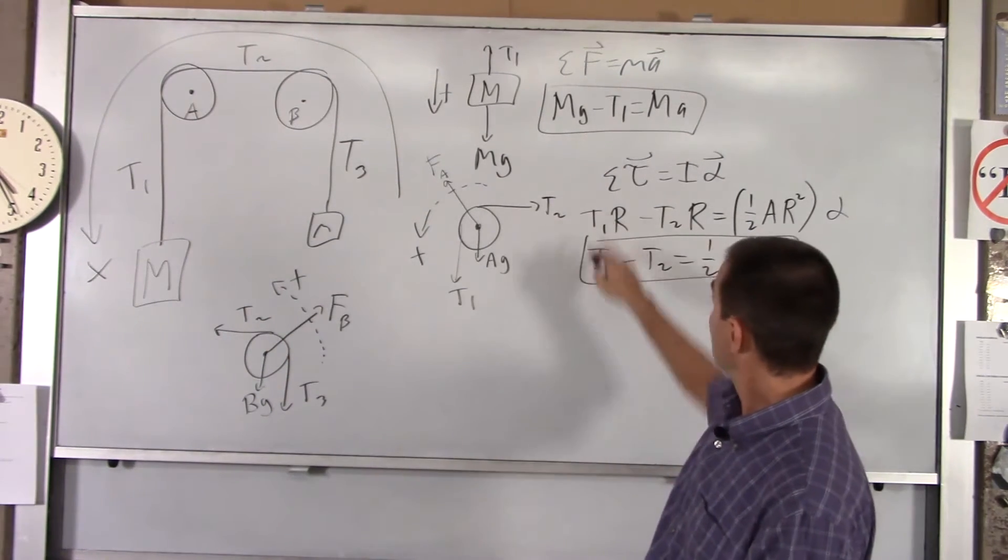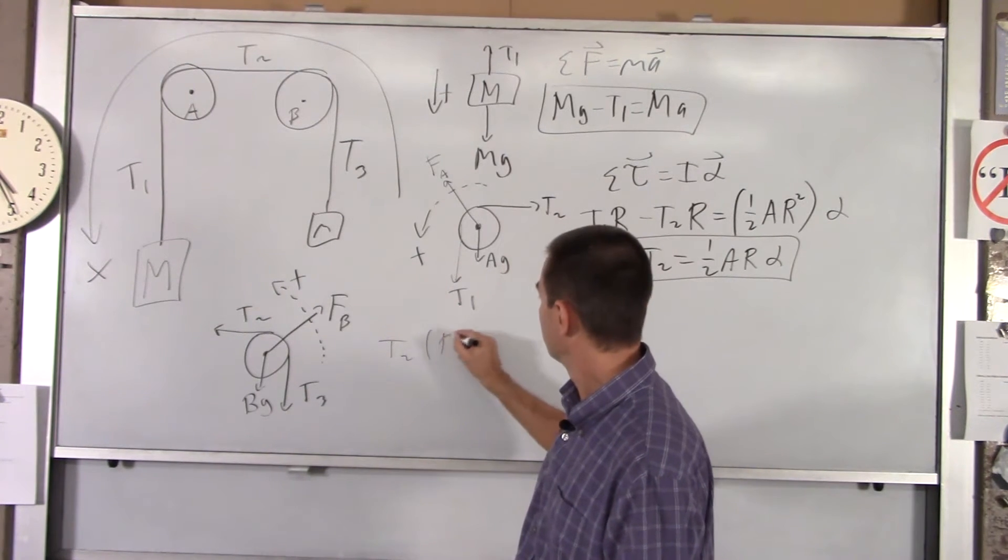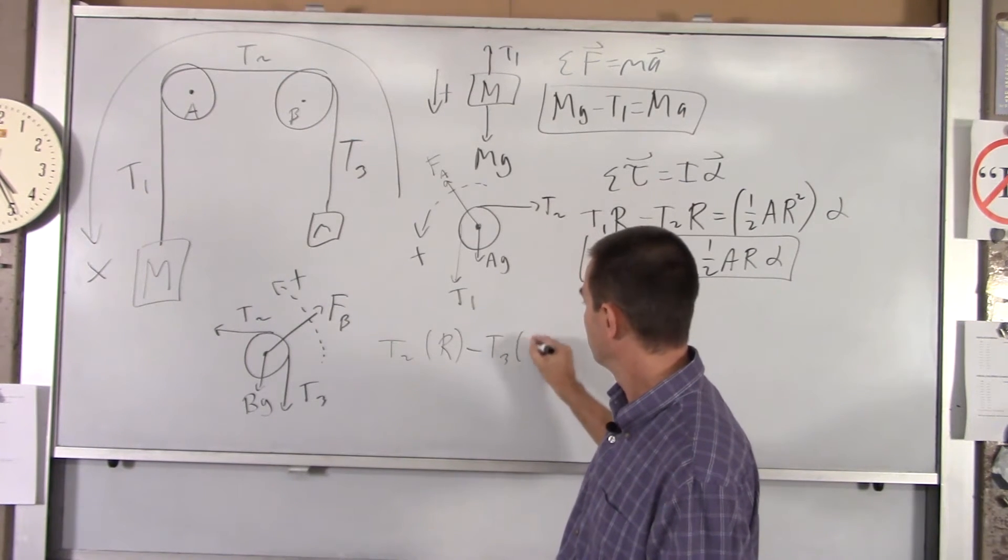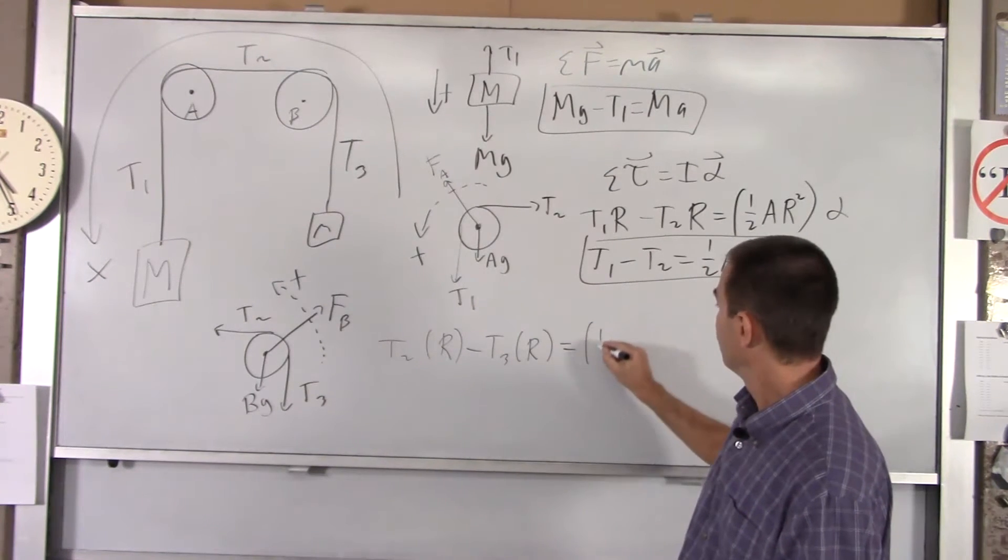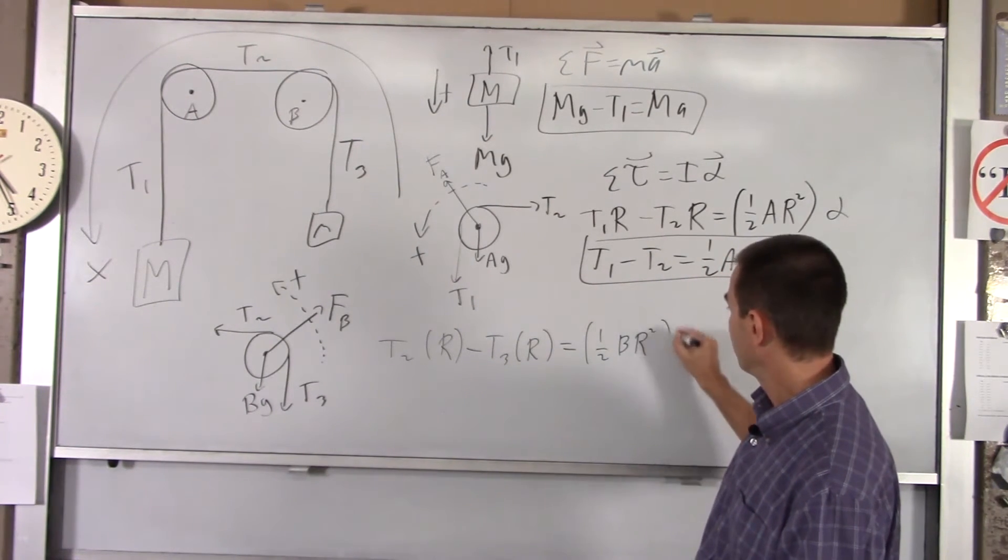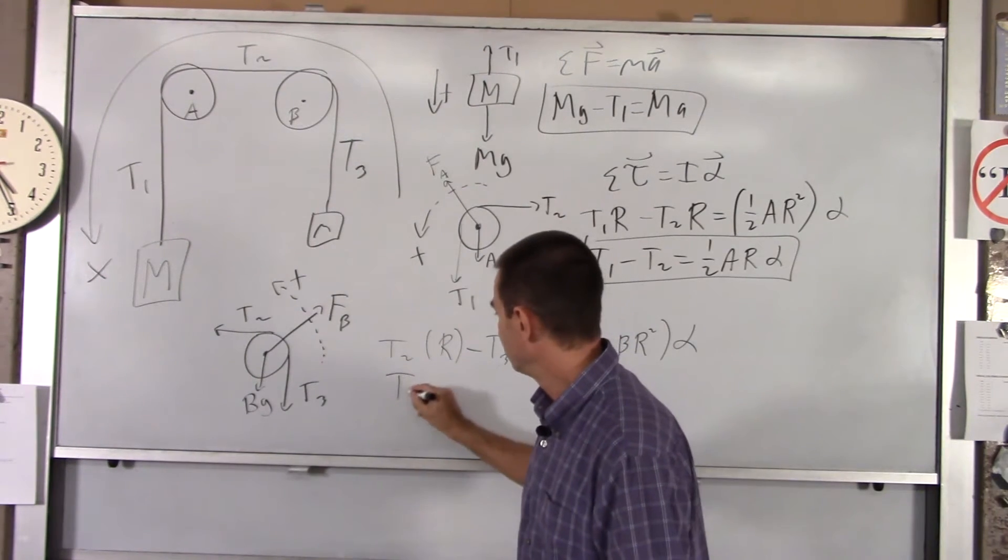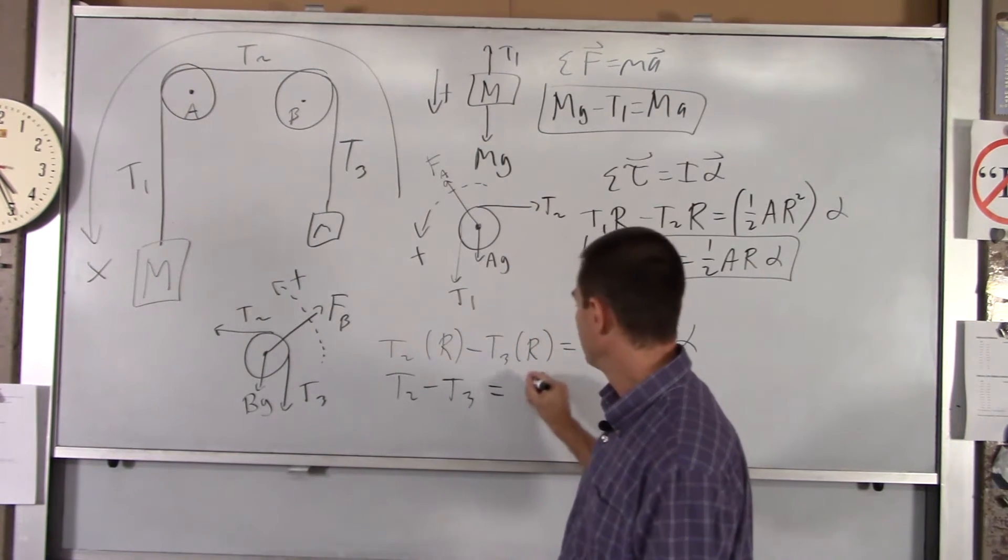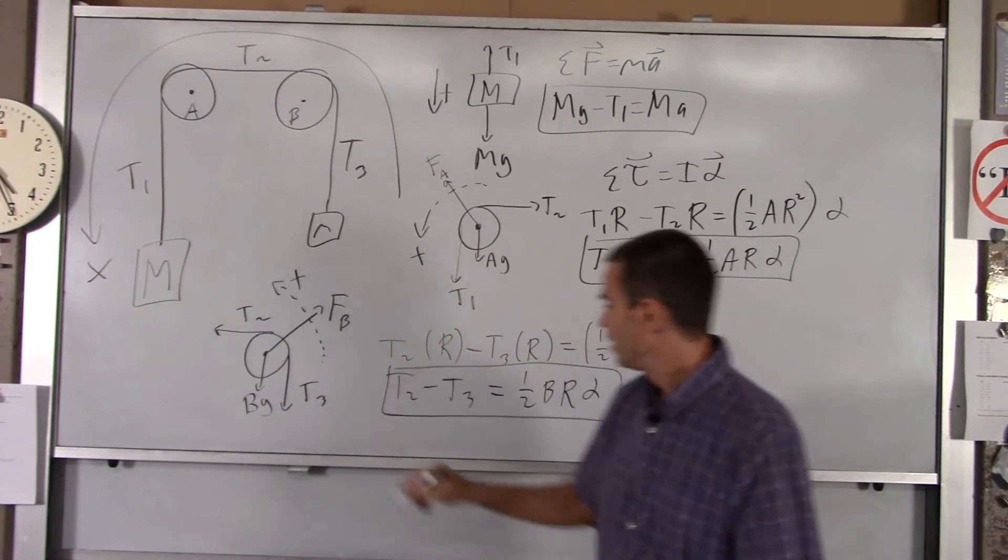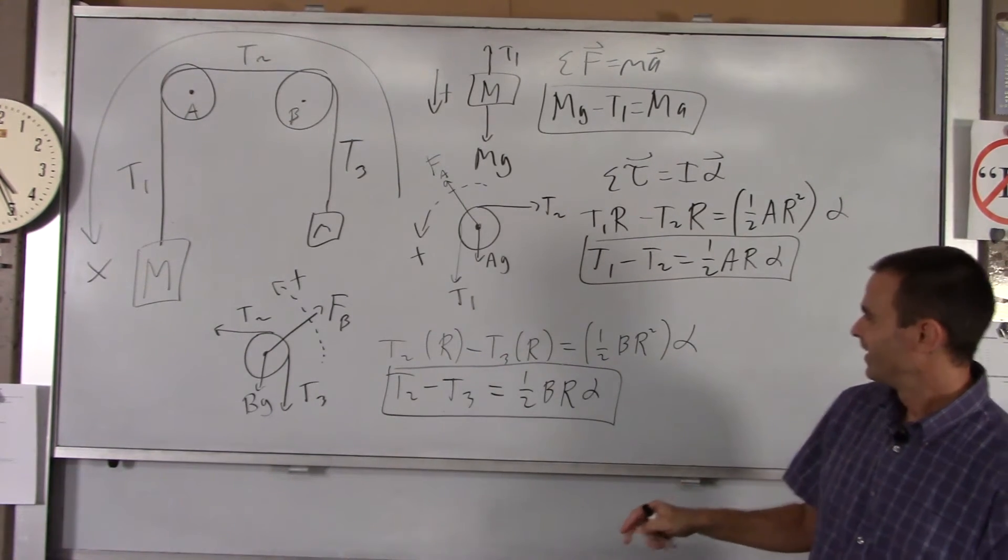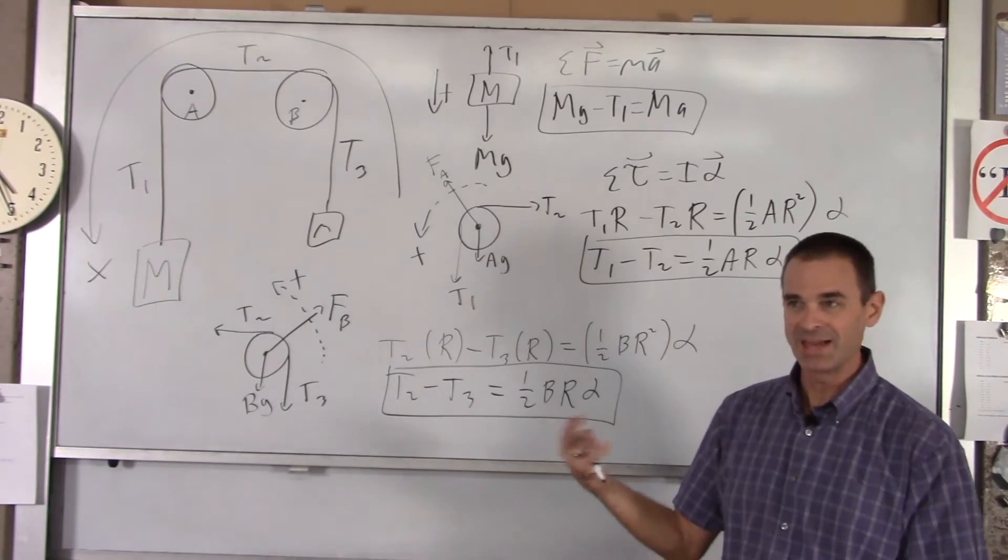T1 and T2 both cause torque. T2 is positive. You've got T2 times R minus T3 times R equals I alpha. I is 1 half BR squared. And then we've got alpha. Again, one of the R's drops out. So you've got T2 minus T3 equals 1 half BR alpha. We've got a third equation, but we've introduced a fifth unknown. So we've got three equations but five unknowns: T1, T2, T3, A, and alpha.